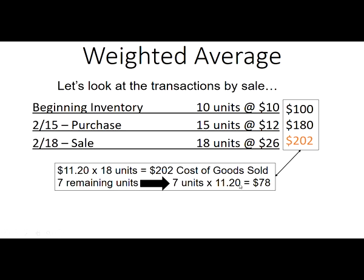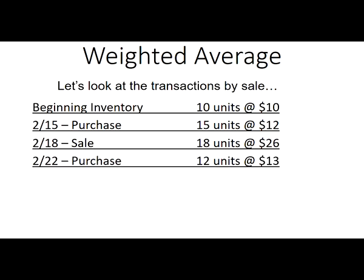Those seven remaining units also carry a cost of $11.20 per unit. Imagine we took all the units, put them together, pulled 18 out — we don't know which seven are left, so we assume the cost of all seven units is maintained at that average cost. Now, what happens when there's another purchase? For homework, exams, and worksheets, you don't need to recalculate the average until you reach a sale. For example, if there are two purchases in a row, you can wait and calculate one average for everything.